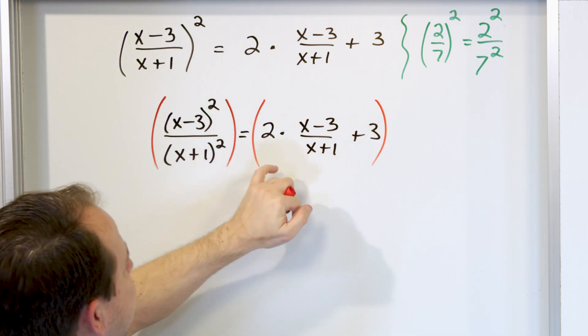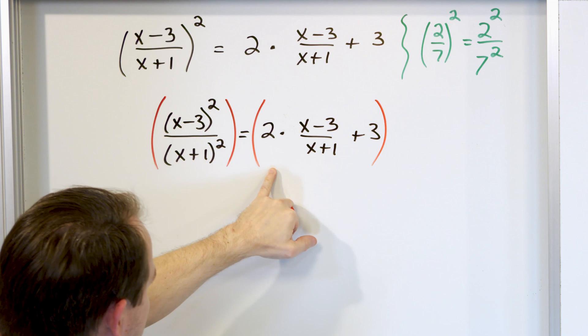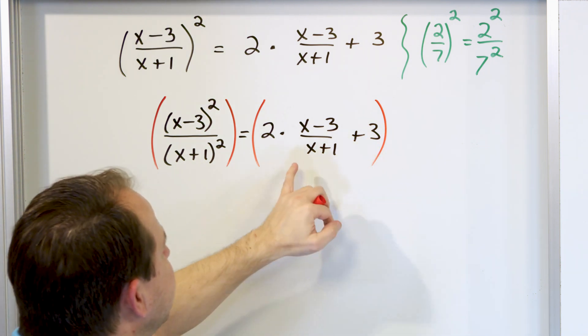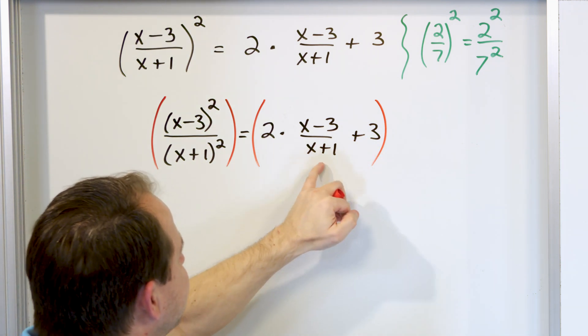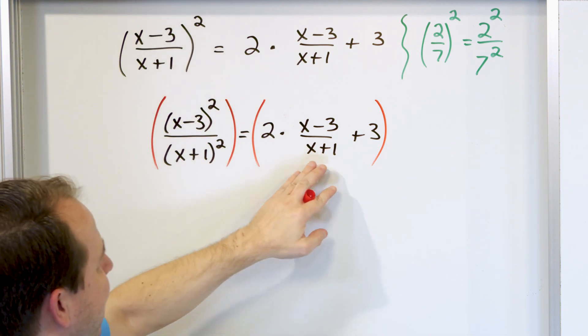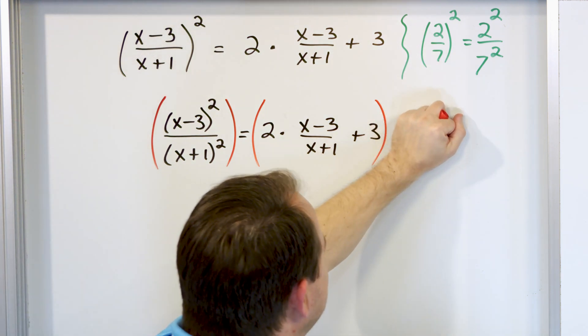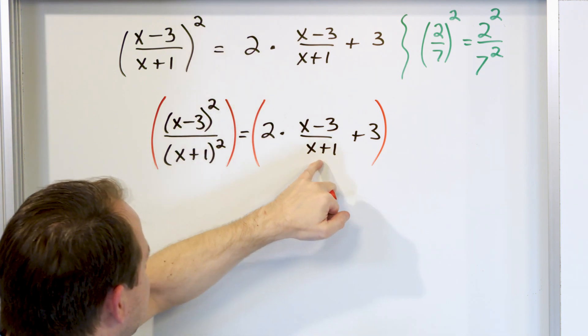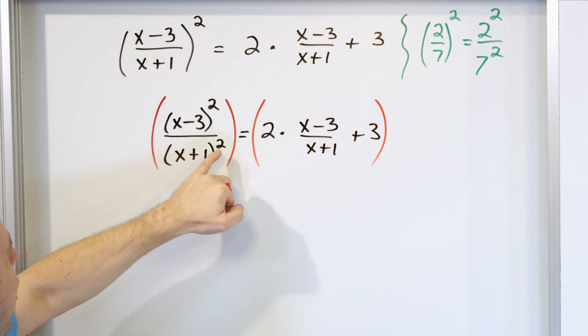Now on the right-hand side, this is a 2, which means 2 over 1. This is a 3, which means 3 over 1. So the only denominator that looks ugly is the (x+1). So I know I have to multiply by (x+1). But if I just multiply by (x+1), it'll cancel this one. But when I multiply over here, it'll only cancel with one of them, and one will be left over.